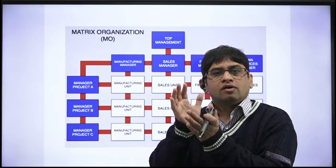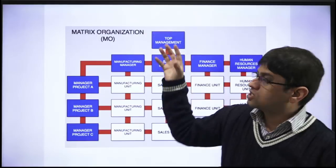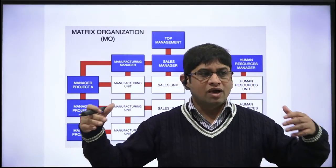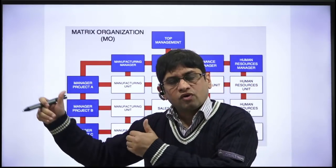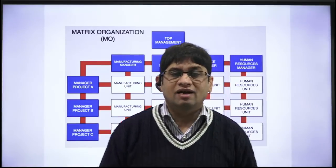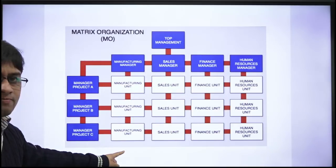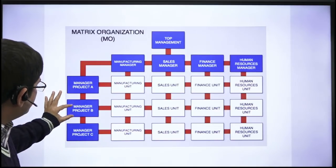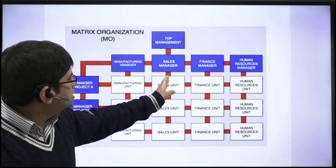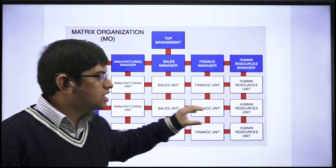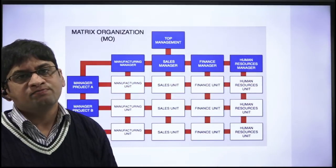We have already discussed concurrent engineering, which is always required to handle complex projects where multi-speciality domains are needed and people from different functional domains are required. In such situations, there is a requirement that different departments are connected and one project is handled by people from all departments. That particular requirement is met by the matrix organizational structure. In this structure, you can have different functionality teams across different projects, and one project can draw people from different functional domains.